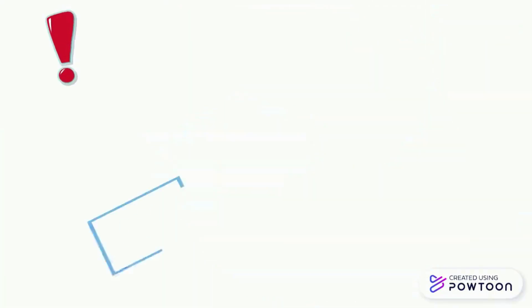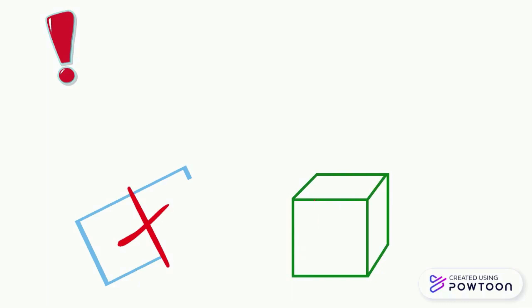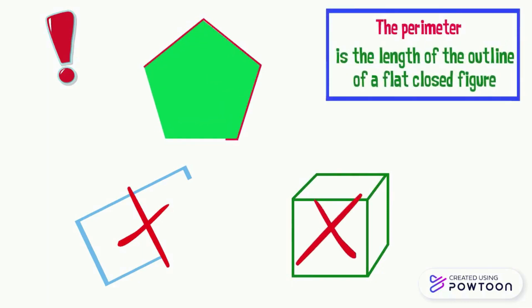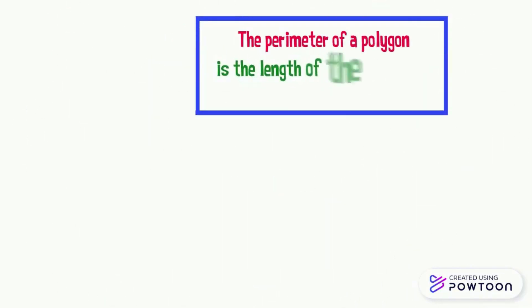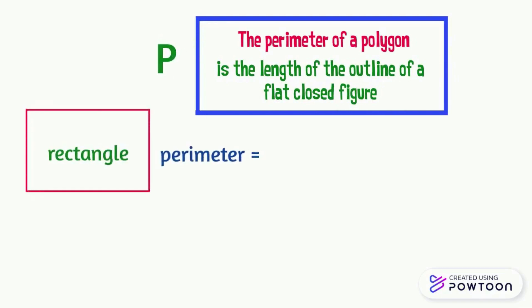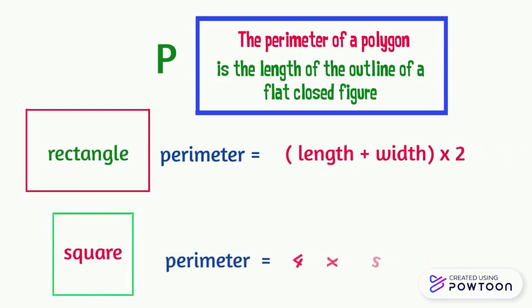Please note that we cannot measure the perimeter of a figure that is not closed, or one that is not flat. The perimeter is the length of the outline of a flat closed figure. So we conclude that the perimeter of a polygon is the sum of the length of all its sides, written simply as P. The perimeter of a rectangle is equal to (length plus width) times 2. The perimeter of a square is equal to 4 times the side.